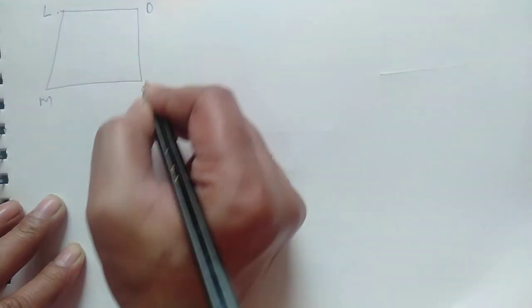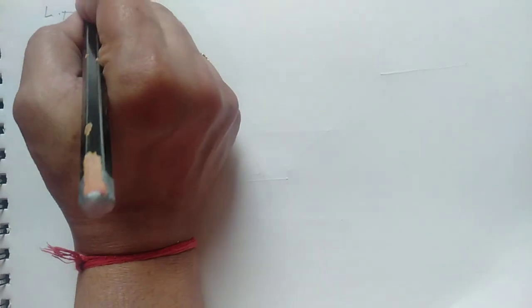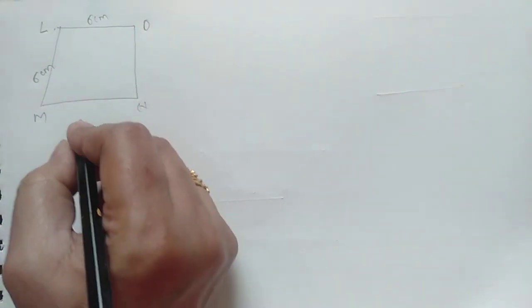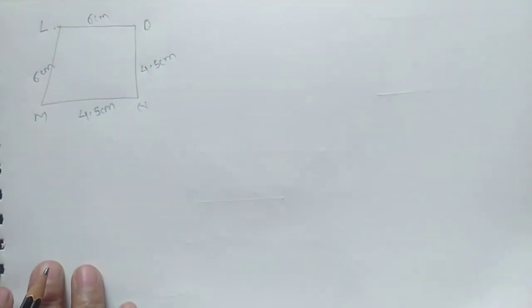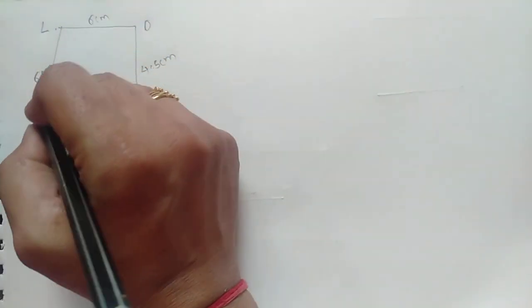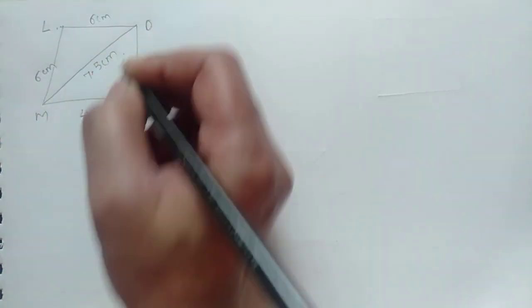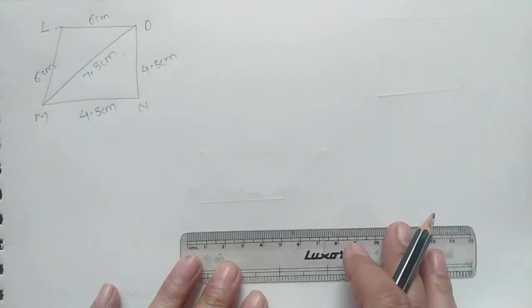In quadrilateral LMNO, length of LM and LO is equal to 6 cm. Length of ON and MN is equal to 4.5 cm. The length of OM — which is a diagonal — is 7.5 cm. Firstly we draw the base line of 4.5 cm with the help of a scale.